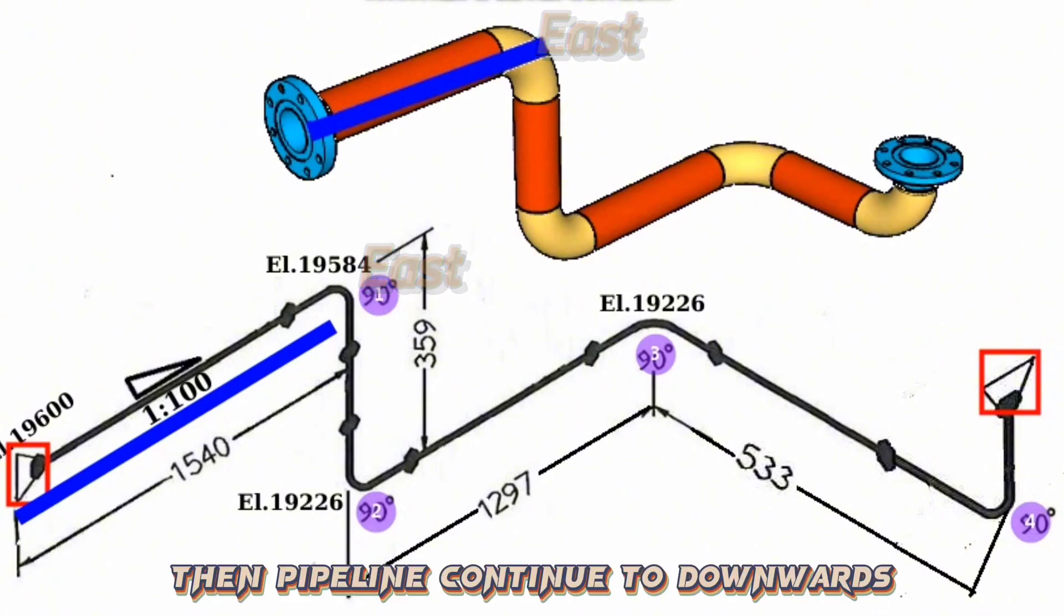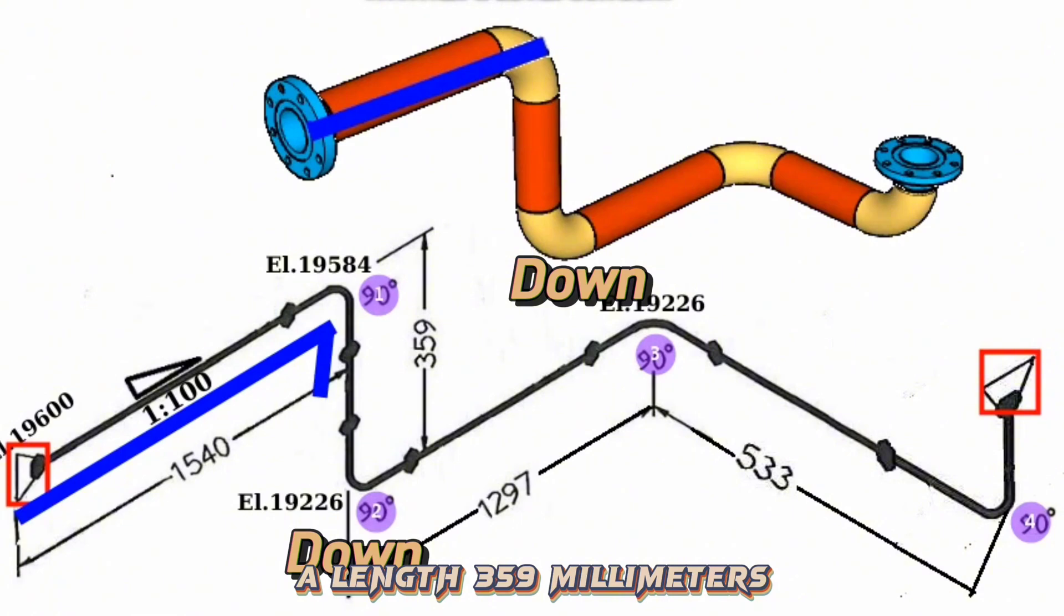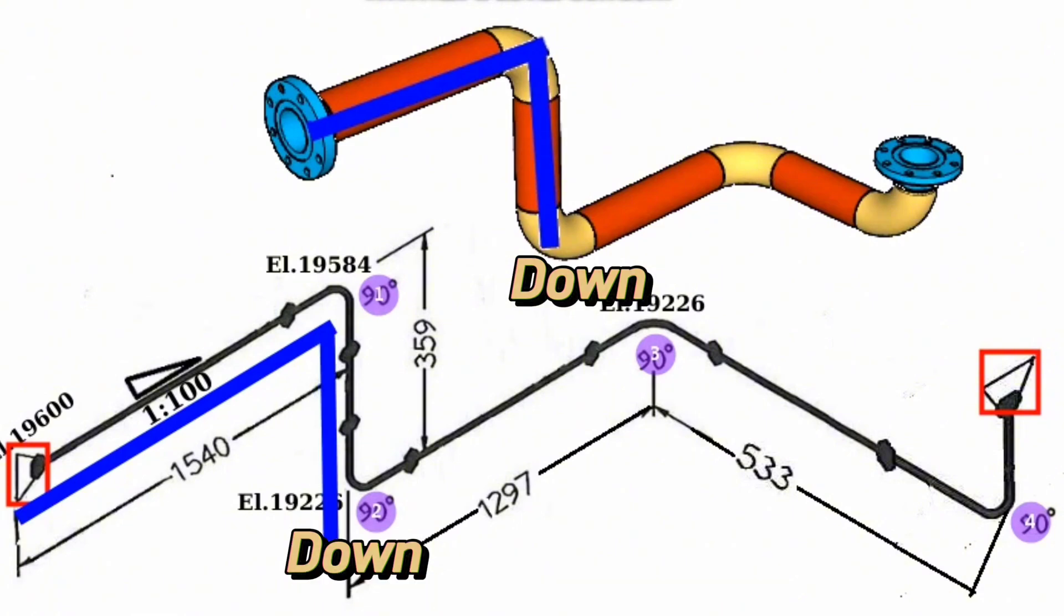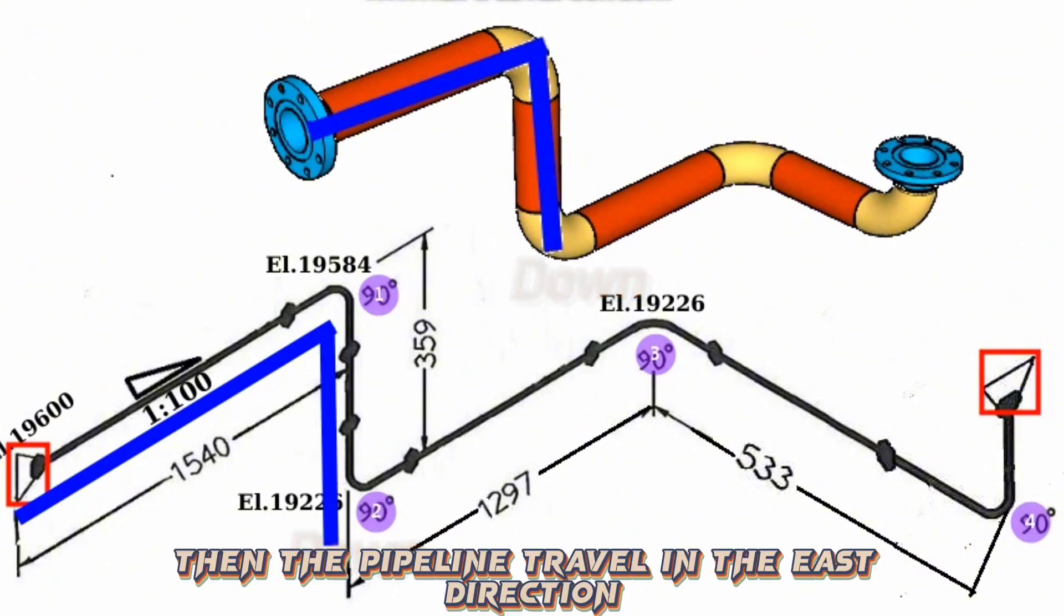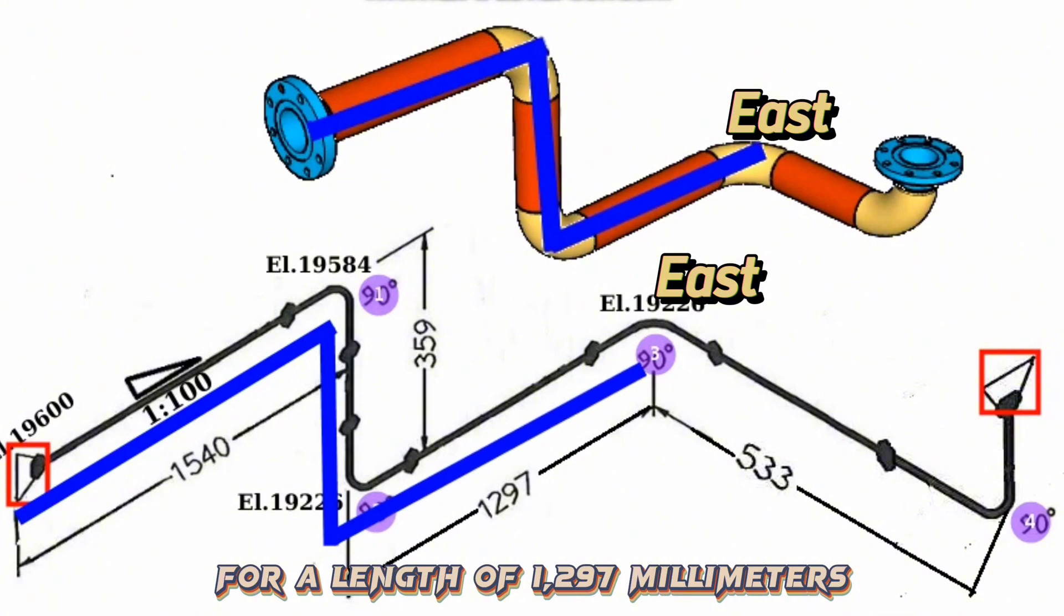Then pipeline continues downward for a length of 359 mm. Then the pipeline travels in the east direction for a length of 1,297 mm.